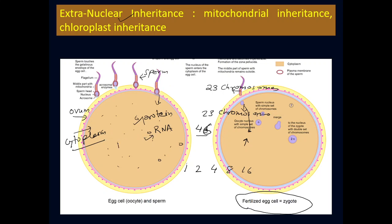These proteins and RNA are very important because they regulate the expression of genes for very early embryogenesis processes. To give you an analogy: the sperm is like a delegate which comes with some information, but the controlling authority for the initial phase is the ovum — the ovum decides which genes have to be expressed.